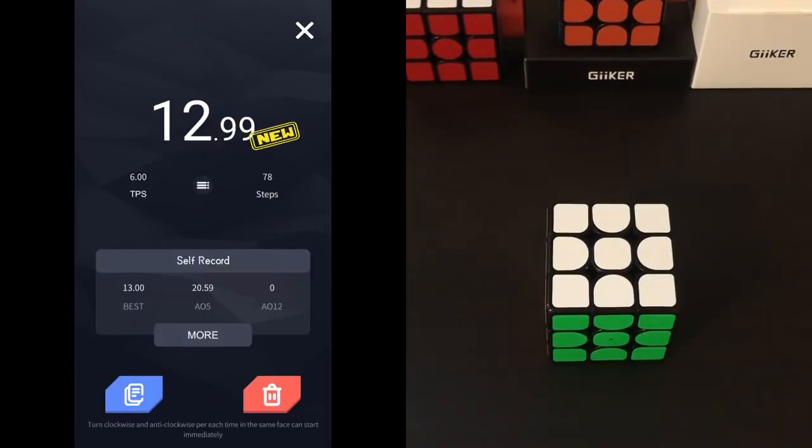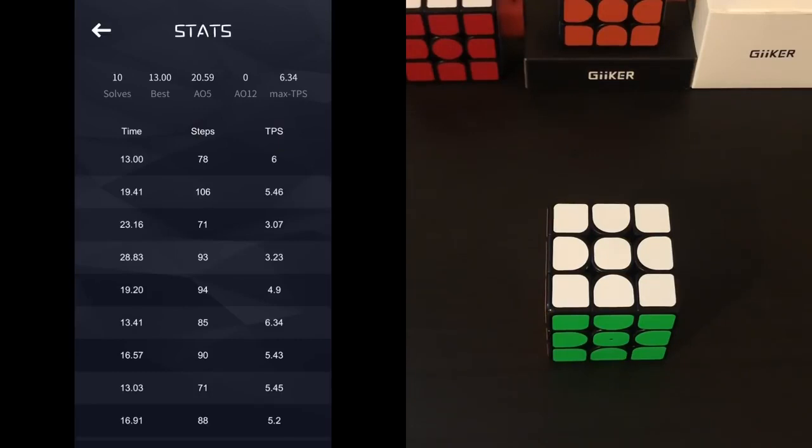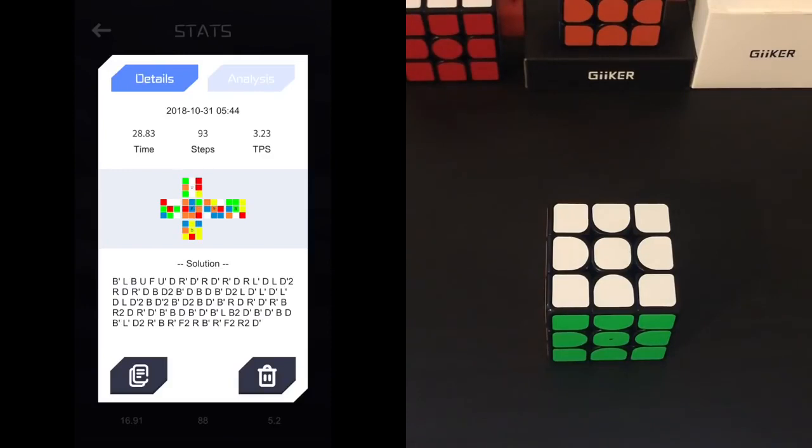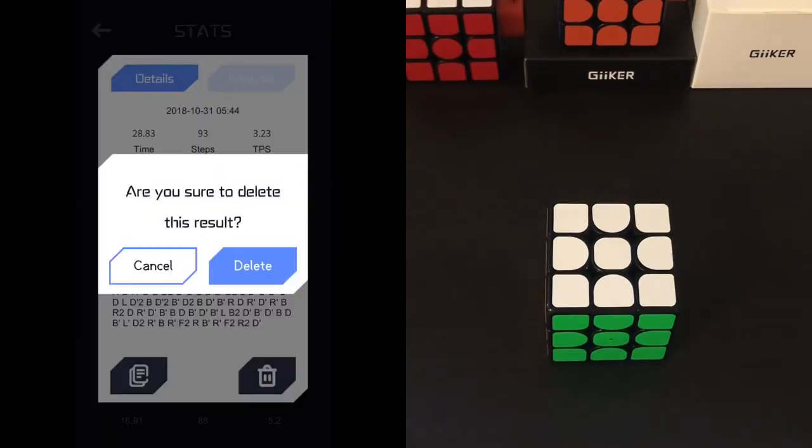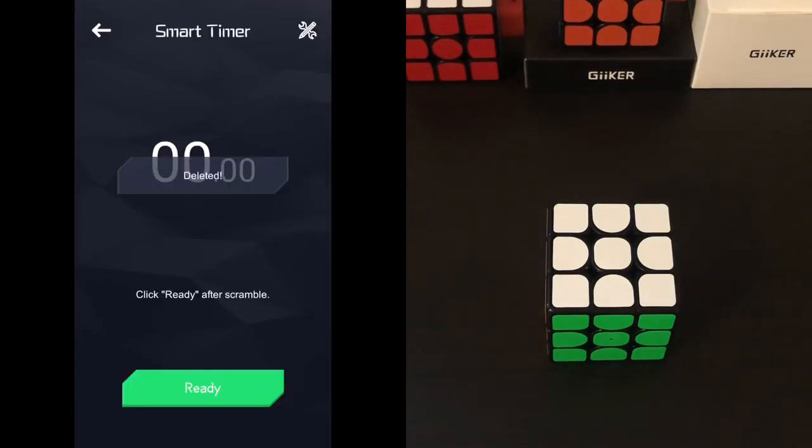So once the solve is done, you have tons of new cool features. Now it tells you your turns per second instead of seconds per turn. Here we can see my TPS was six. You can see the total moves made, your current best time. In this case this is a new PB on the app so that's why you see new on the top. You can see your current average of five as well as your current average of 12. So clicking on more shows you all the stats for all your solves, including the time, the moves, the TPS. On the top you can see the number of solves total in the session. And if you click on any of them, in this case 28 second solve which is incredible, you can see what the scramble looked like, you can see your solution, the TPS and the number of moves made. And if you want to copy that solution, just click on the bottom left and then a little thing pops up. The result has been copied. Or if I want to delete it, just go ahead and click the little trash can, which I definitely want to do on that 28 second solve.